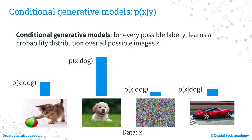Conditional generative models learn a probability distribution over all possible images X for each possible label Y. For example, a model trained on cats, dogs, and cars: if we want to generate images of dogs, the probability of those images being a dog will be higher than being a cat or a car. By learning a conditional probability distribution, the model uses the label Y as a criterion for generating images of a specific type.